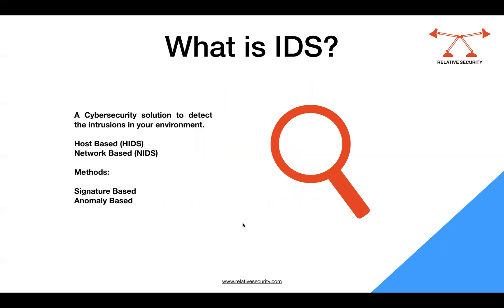IDS is a cybersecurity solution to detect intrusions in your environment. As discussed in another video, it has two parts: it can be host-based, collecting data from the host, or network-based. Detection works either through signature-based or anomaly-based methods. If it sees behavior matching known signatures or previously observed patterns, it flags it; otherwise, it triggers an alarm for the relevant stakeholder.